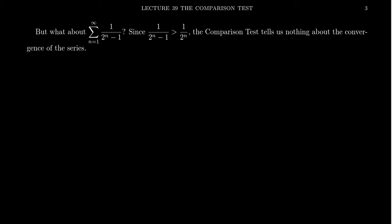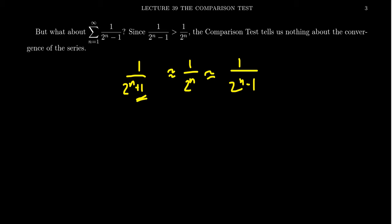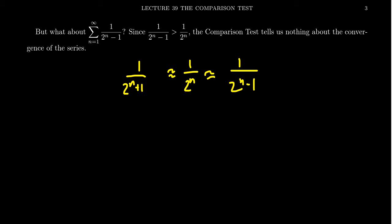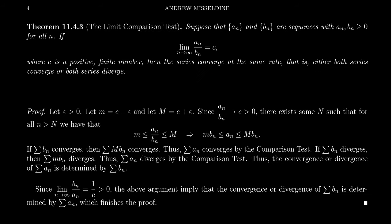But it feels like we should be able to use the comparison test here, because 1 over 2 to the n is approximately the same as 1 over 2 to the n plus 1, and approximately the same as 1 over 2 to the n minus 1. This feels like blatant discrimination. The comparison test has this limitation from inequalities. But it turns out there is a good way to remove the limits of the comparison test — by taking a limit. The key to a limitless comparison test is to take limits. Enter the limit comparison test.